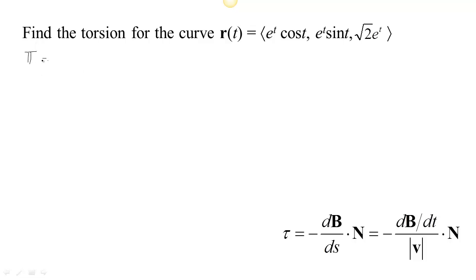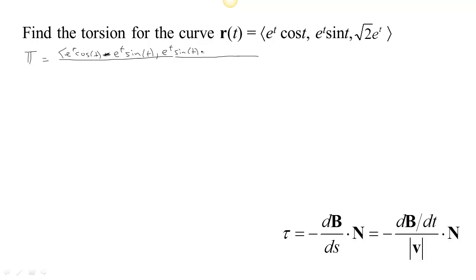First we need to get our unit tangent, which is going to be the velocity divided by the speed. For our velocity, to take these derivatives we're going to have to use the product rule. We get the derivative of the first times the second plus the first times the derivative of the second. The derivative of cosine is minus sine, so we get e^t minus e^t sine t. Then we have e^t: derivative of the first times the second plus the first times the derivative of the second. The derivative of √2 e^t is √2 e^t.